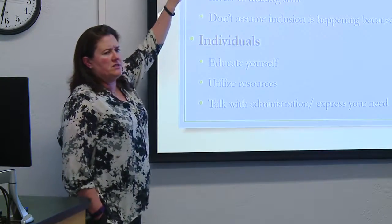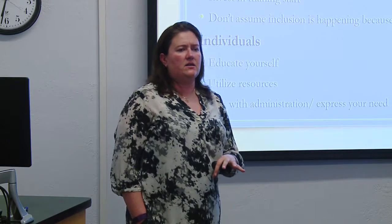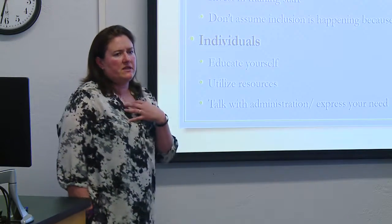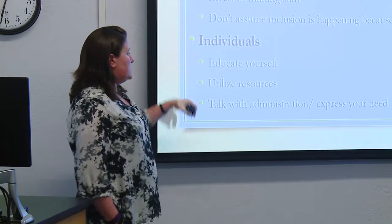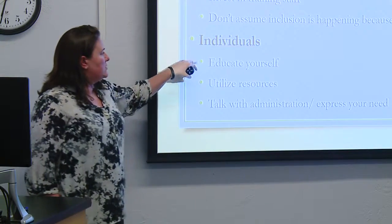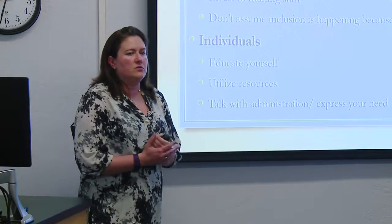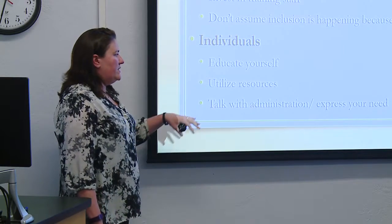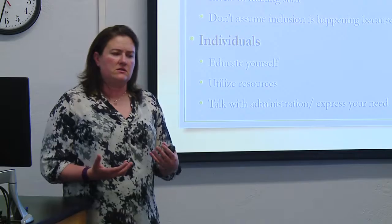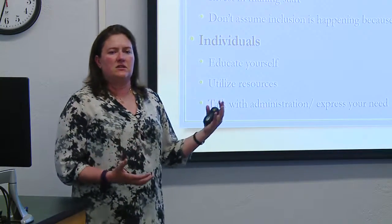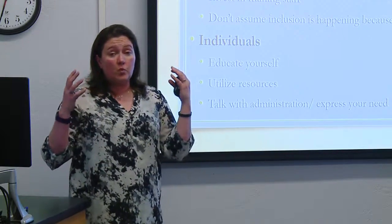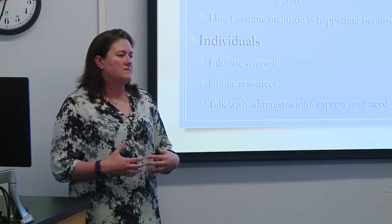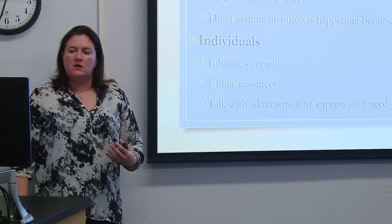From an individual standpoint — because while we'd love for organizations to jump on board and make everything happen, we can't always wait for that — when you're at the point where you're working with youth or adults with disabilities, sometimes it takes us being responsible and saying 'I need to figure something out.' Some things you can do: educate yourself, utilize the resources that are available. Many communities have resources, so find out what's available. Talk with administration and express your need — sometimes it has to come from the bottom up: our program is suffering or individuals aren't getting as much out of it because we need these things. Being vocal about needs can be very helpful.